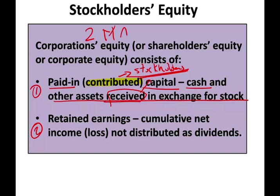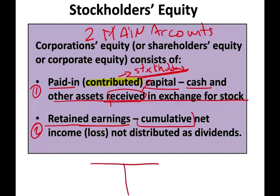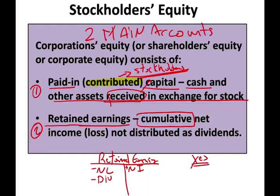The two accounts that represent the largest component of equity are paid-in capital and retained earnings. Retained earnings is a cumulative account — it accumulates over the years. It has a credit balance. Every time we have net income, retained earnings goes up. Every time we have a net loss, retained earnings goes down. Every time we pay a dividend, retained earnings goes down. Those are the three main things that affect retained earnings, though there are other transactions as well.